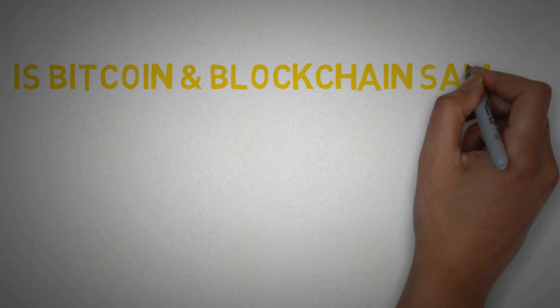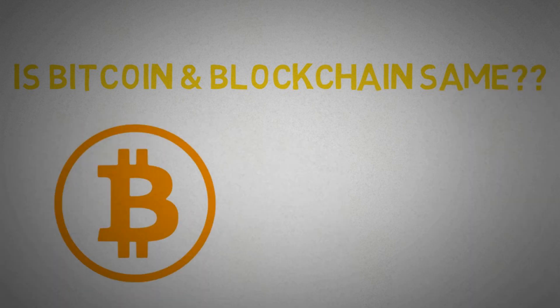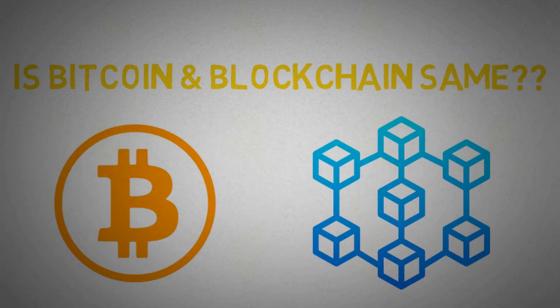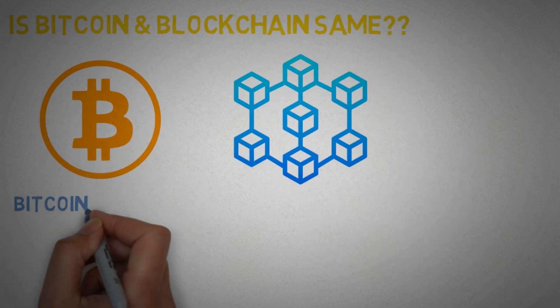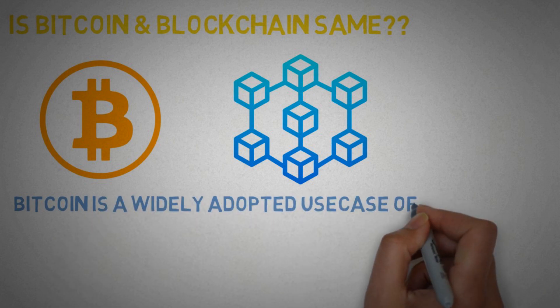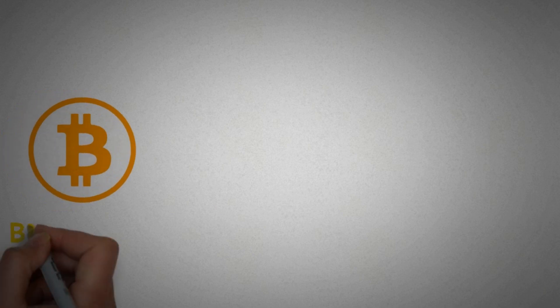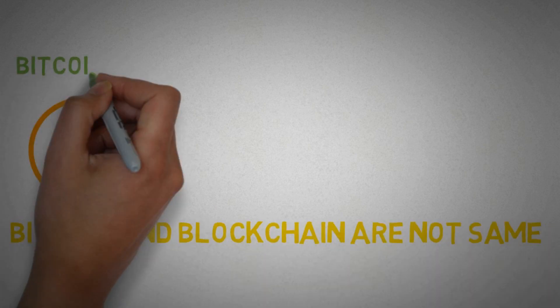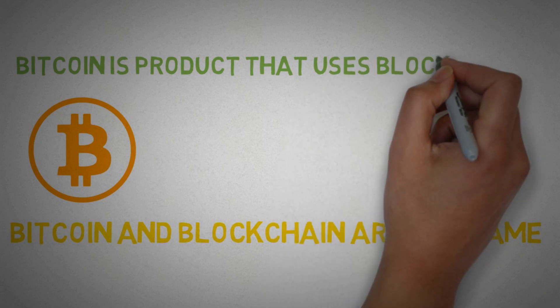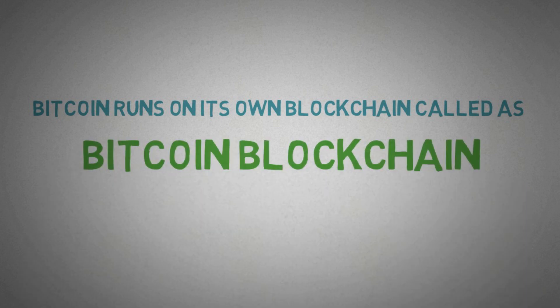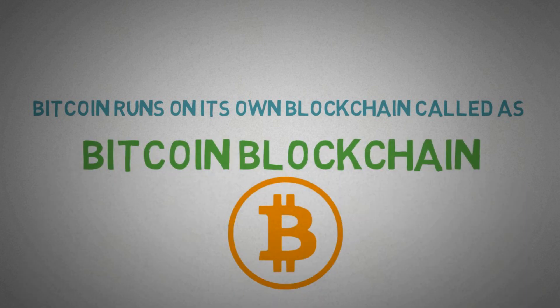The myth is: are Bitcoin and blockchain the same thing? Bitcoin is one of the first widely adopted cryptocurrencies that leverages blockchain technology. This means Bitcoin is a major widely adopted use case that leverages blockchain technology. The answer is no — Bitcoin and blockchain are not the same thing. Bitcoin is a product that uses and leverages blockchain technology, and it runs on its own blockchain.